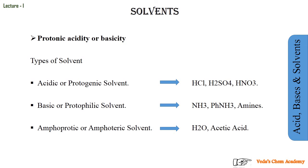Now we move to the concept of protonic acidity or basicity. The first type is the acidic or protogenic solvent. Acidic means those substances able to provide H⁺ (proton). Protogenic is another word for acidic — those which provide a proton. Examples are HCl, H2SO4, and HNO3. These are protogenic or acidic solvents because they are always ready to provide H⁺.